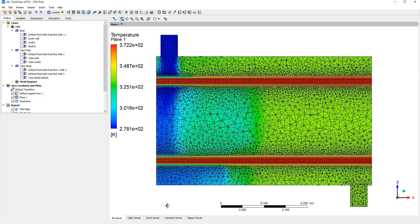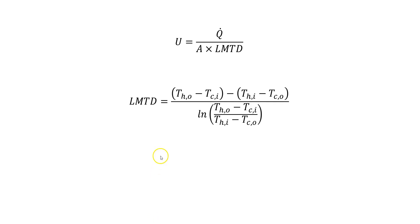If we begin by looking at the definition of the overall heat transfer coefficient: it is given by the variable U, where Q-dot is the rate of heat transferred out. That can also be written as mass flow rate times Cp times the change in temperature. A is just some area — in this case it's going to be the area of the outside of the tubes. There is also this LMTD term, which is the log mean temperature difference. It's an average temperature difference, but because heat transfer isn't linear along the shell and tube, we need to account for that by taking a log mean.